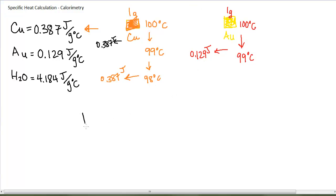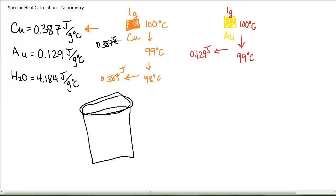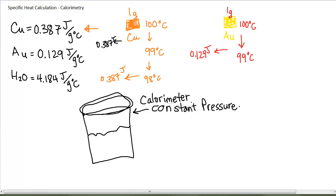Remember that the first law of thermodynamics says that the energy of the universe is constant — the energy of the universe is conserved. One experiment we can do to figure out specific heat capacities is to use a calorimeter. A calorimeter is a device to measure heat changes. A constant pressure calorimeter is what we will use in the laboratory to measure enthalpy changes, because it's very easy. A constant pressure calorimeter is a very cheap piece of equipment — in fact, it is simply a couple of coffee cups nested inside each other, which will thermally insulate the material inside from the surroundings, making everything inside our system.